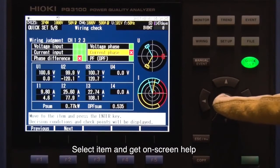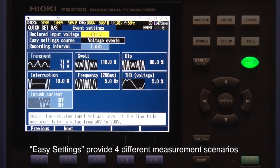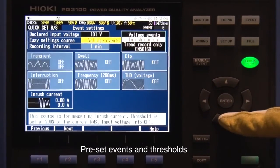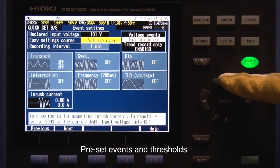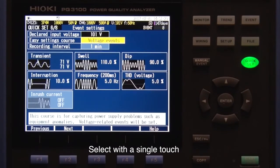Select the items you want to adjust and get tips on how to fix the problems. Within the quick set function under easy settings, you can choose from several different measurement scenarios. The screen shows the threshold set for each parameter. Simply select the scenario with a single touch.